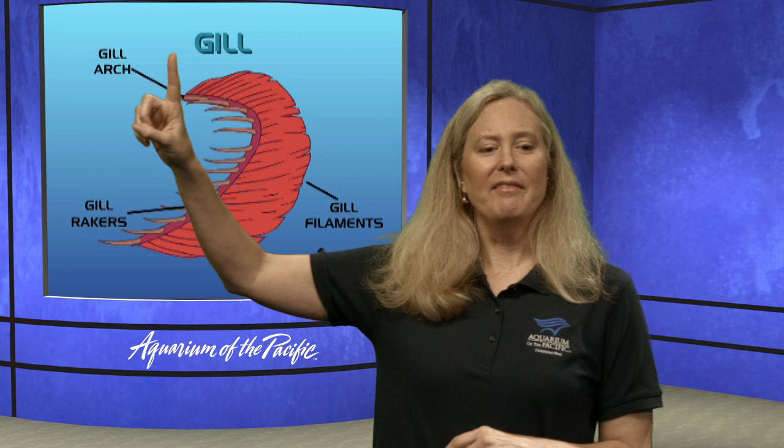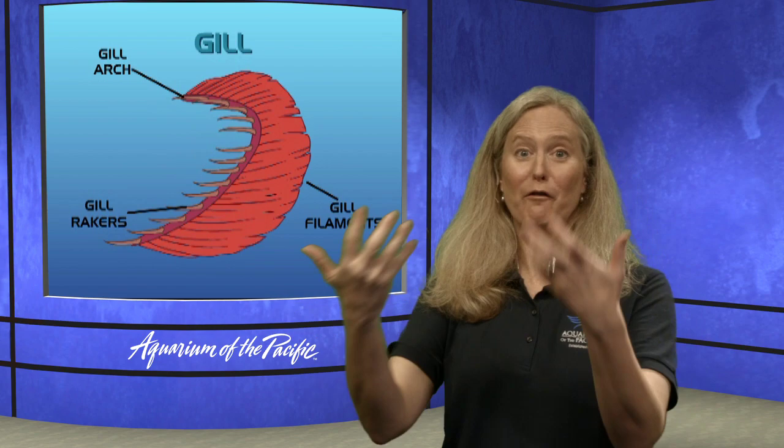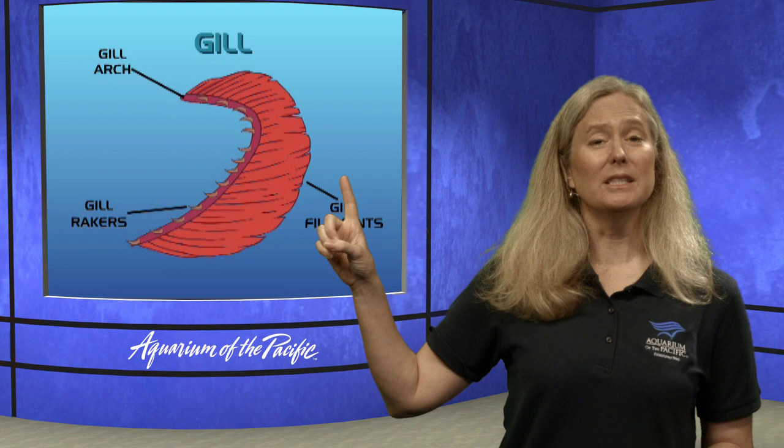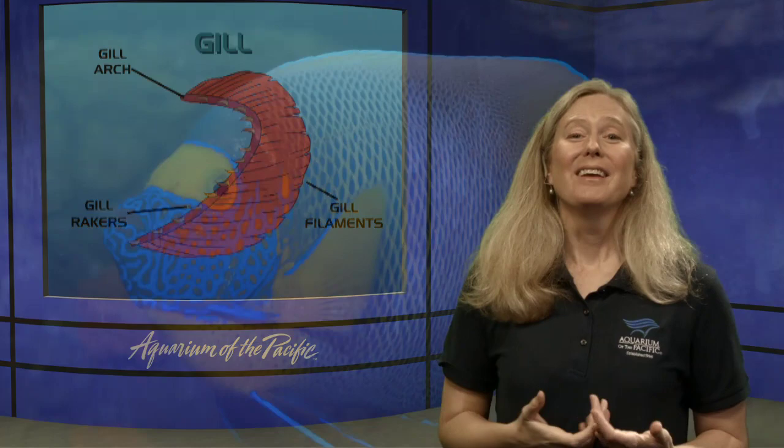This is what the gills look like — they're right underneath that little flap called the operculum, which is like a little door over them. If you look at one gill filament, there's an arch and things called gill rakers that come forward to make sure food doesn't get stuck in the gills — just like we don't want food going into our lungs. The gill filaments are actually what takes the oxygen from the water to help the fish breathe.